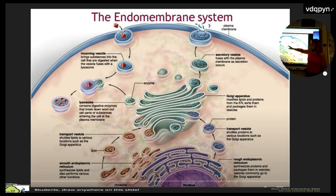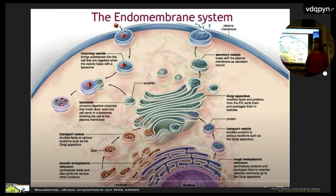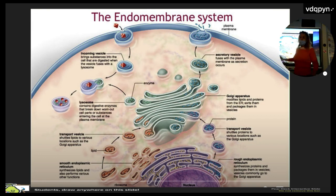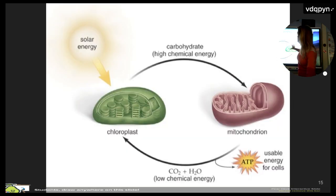The endomembrane system involves the flow of information between the nucleus, the ER, and the Golgi. We can also talk about lysosomes as the stomach of the cell. Then we look at the energy organelles — mitochondria and chloroplasts — and their connection to evolution.